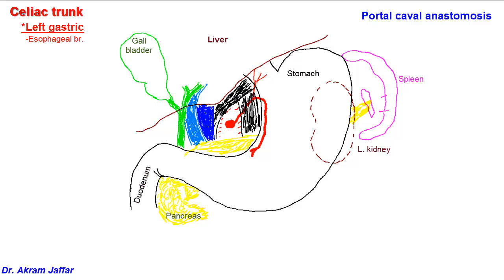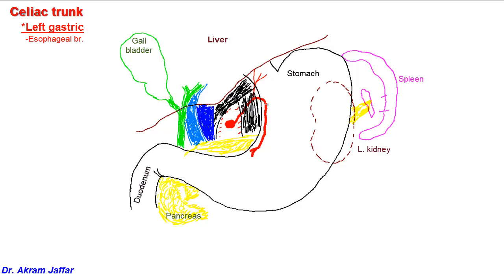These veins might become engorged and distended in cases of portal hypertension because of this anastomosis — this is called esophageal varices. The left gastric artery, as it passes along the lesser curvature of the stomach, supplies gastric branches toward the anterior and posterior surfaces of the stomach. It will anastomose with the right gastric artery, which comes from the right side. The second branch from the celiac trunk, which is in fact a big artery, is the splenic artery.